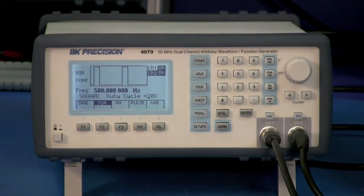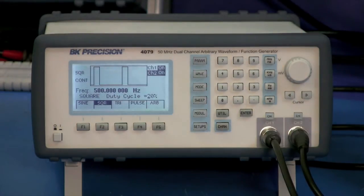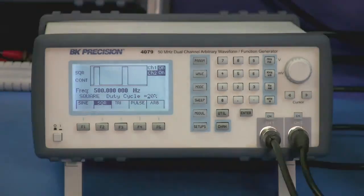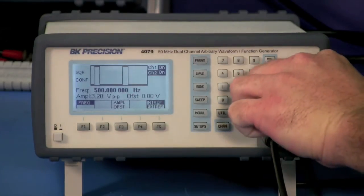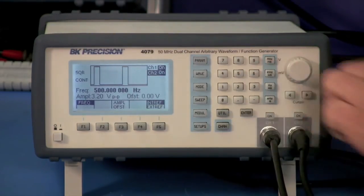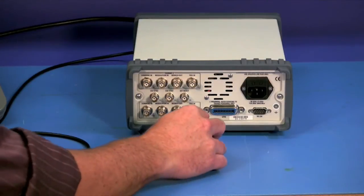Here we are using the 4079's Channel 2 as the trigger signal. We have it set to output a 500 Hz square wave with a 20% duty cycle. The output is connected with this BNC cable to the Rear Channel 1 trigger input, here on the back.